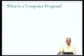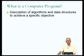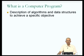Let me start by trying to answer this somewhat basic question: what is a computer program? In a course on programming or the first course in computer science that you take, you will be told that a computer program is a description of algorithms and data structures to achieve a specific objective. You write a program with some objective in mind — for example, you may be writing a program to multiply two matrices.